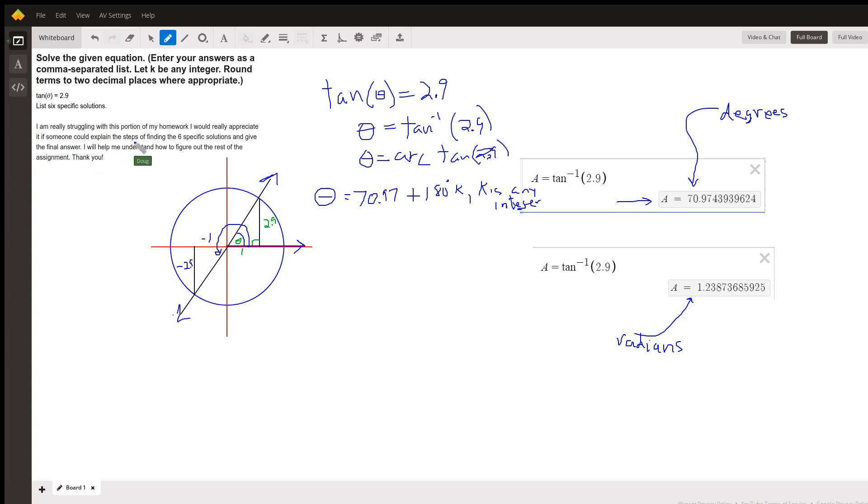When it asks for six specific solutions, those aren't the only ones. You get to choose. So you could let k equal 0, 1, 2, 3, 4, and 5. And you get numbers like 70.97 when k is 0. When k is 1, you get 70.97 plus 180, or 250.97, and so on.